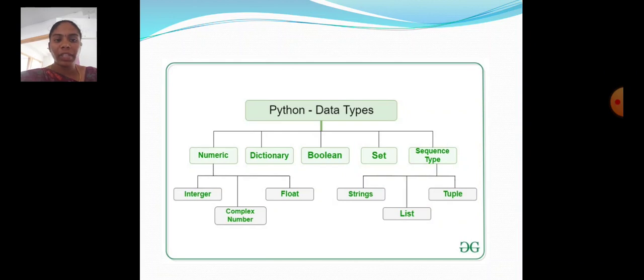Then, numeric have three divisions: integer, complex, float. Next, sequence type have three divisions: string, list, tuples.